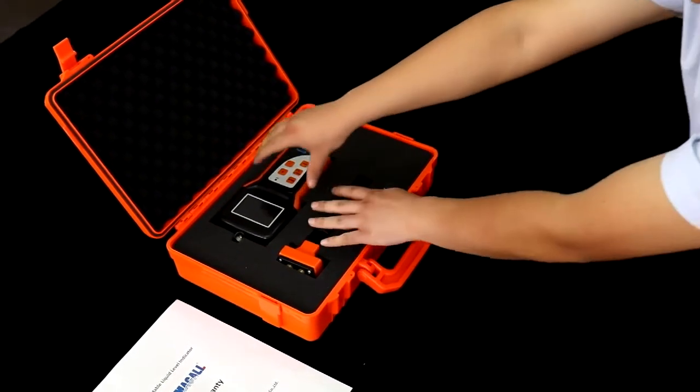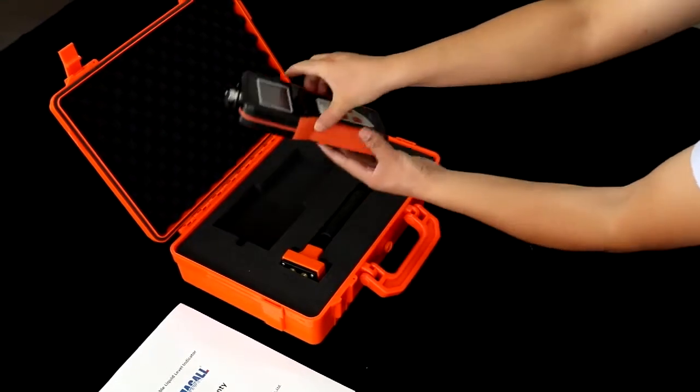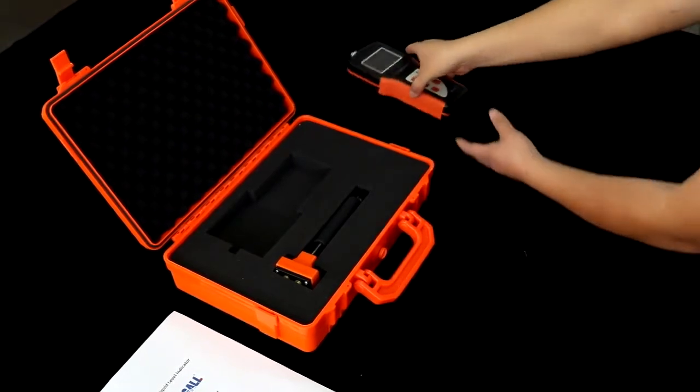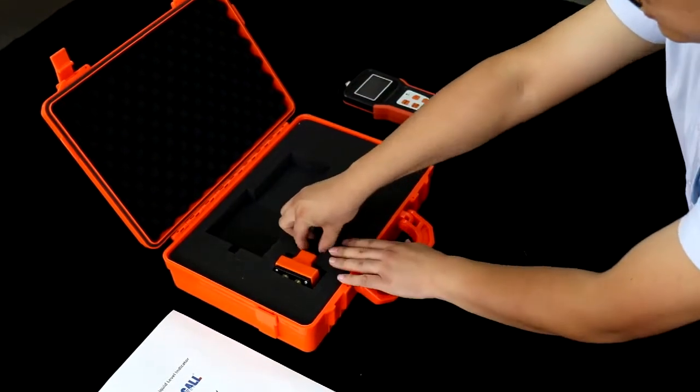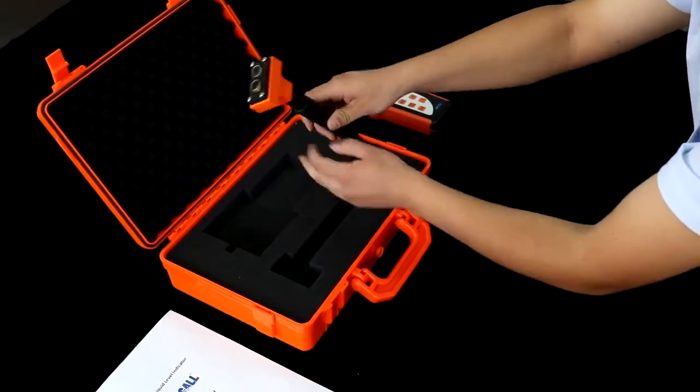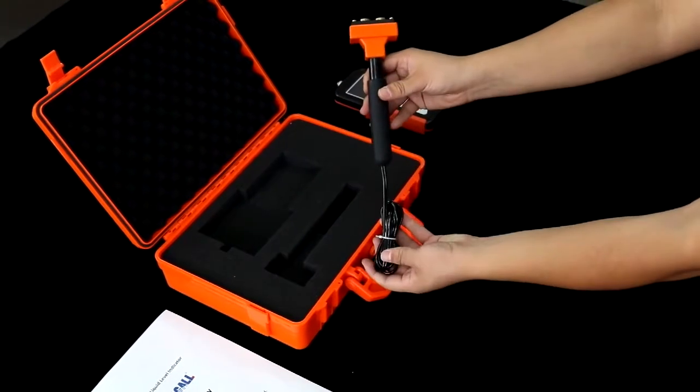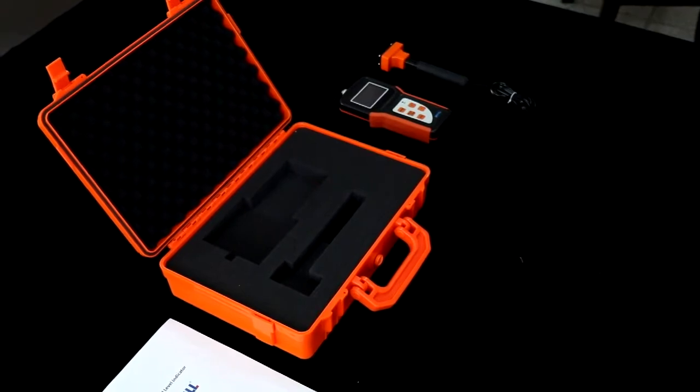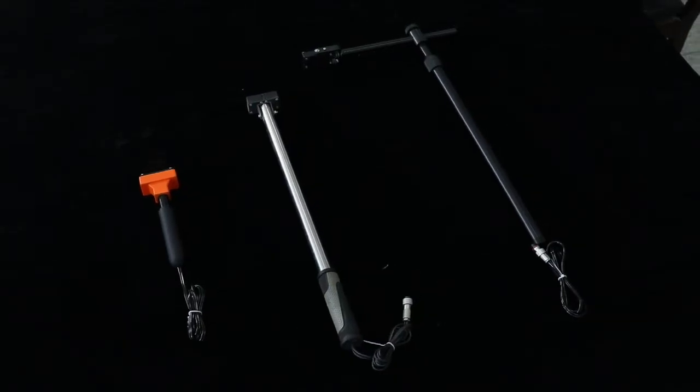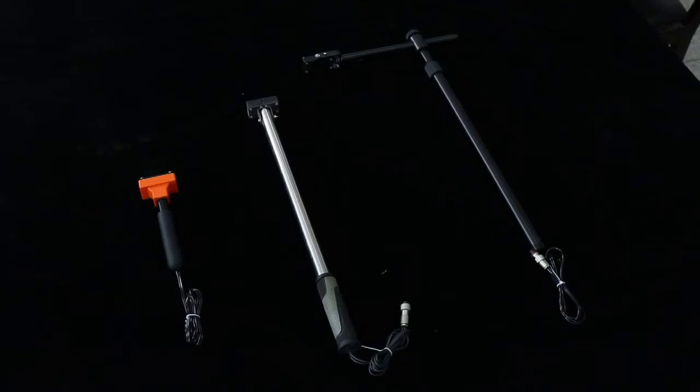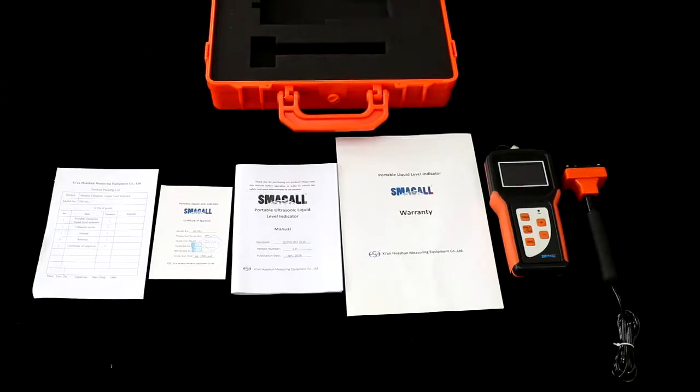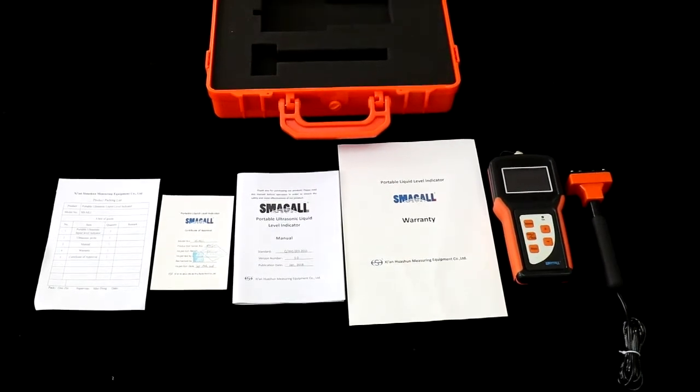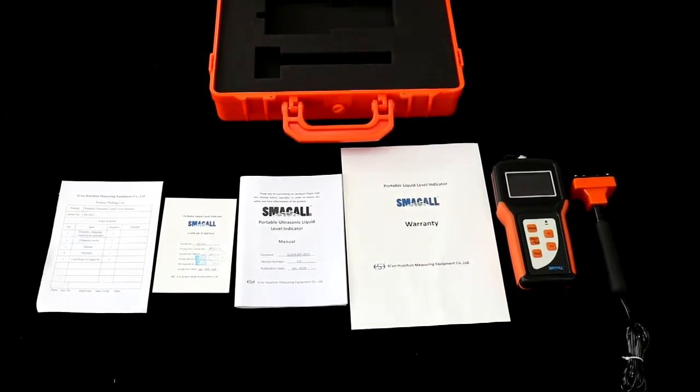The device consists of the main handheld part and probe. There are three types of probes available: one short rod, one long rod and one telescopic rod. This ensures easy measurements in different scenarios.